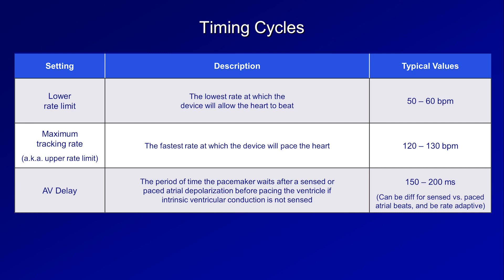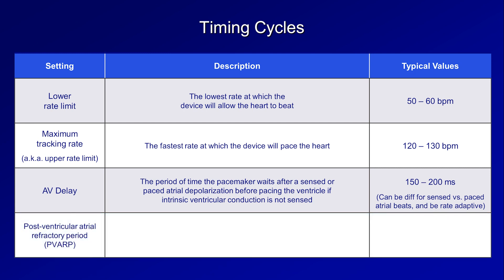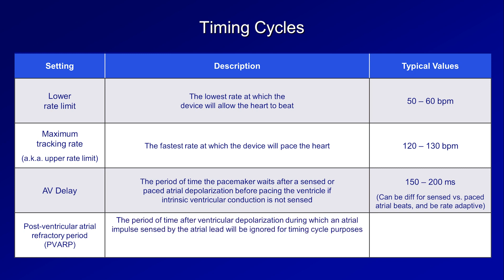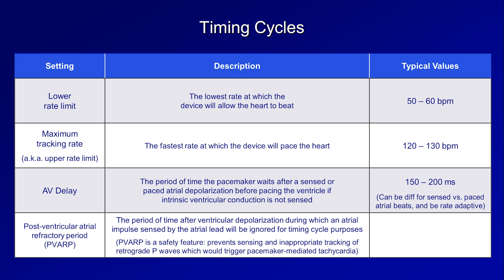The last major timing setting is the postventricular atrial refractory period, or PVARP. This is the period of time after ventricular depolarization during which an atrial impulse sensed by the atrial lead will be ignored for timing cycle purposes. Among other purposes, the PVARP prevents sensing and inappropriate tracking of retrograde P waves, which could trigger pacemaker-mediated tachycardia. Typical values are 250 to 300 ms, and as with AV delay, it can be rate-adaptive.